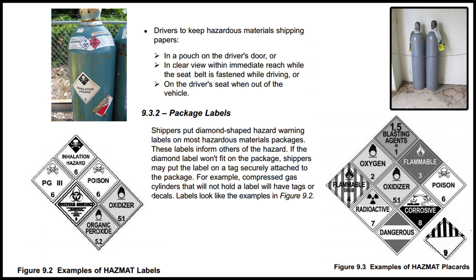9.3.2 Package labels: Shippers put diamond-shaped hazard warning labels on most hazardous material packages. These labels inform others of hazards. If the diamond label won't fit on the package, shippers may put the label on a tag securely attached to the package. For example, compressed gas cylinders that will not hold a label will have tags or decals. Labels look like the examples in Figure 9.2.